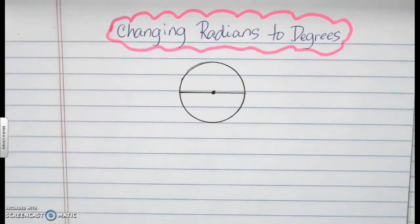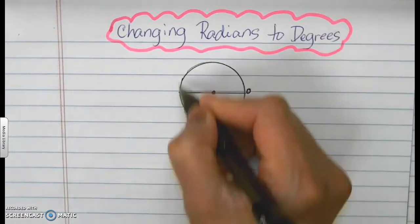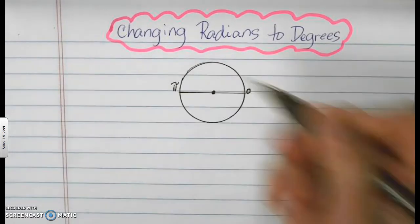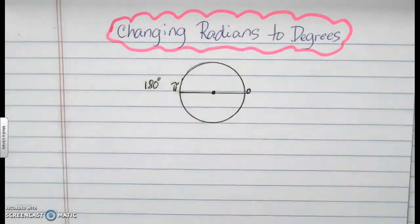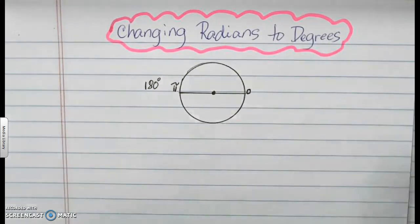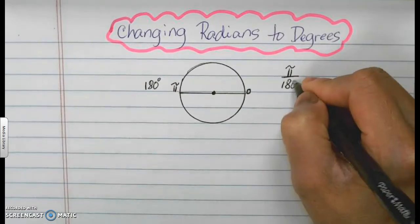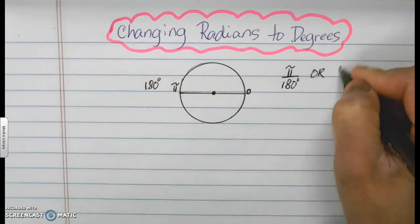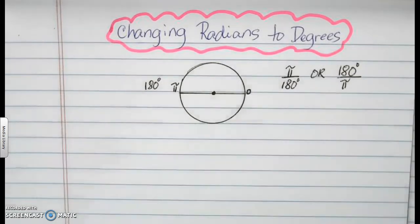So our next topic is changing radians to degrees. First of all, we need to review our unit circle. So our unit circle is from here to here is going to be pi. And again, pi is the same as 180 degrees. So our conversion factors are either pi over 180 degrees or 180 degrees over pi, depending on our situation.